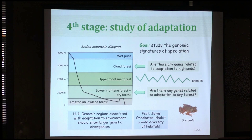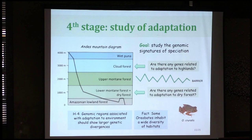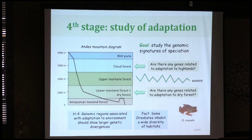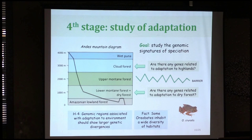The fourth stage is the study of adaptation. We want to study whether there are genomic regions that differ between species because of adaptation. For example, Oriobates crugalis can be found in up to three or four different habitat types — cloud forest, mountain forest, and dry forest. We want to know if different populations have distinct genomic regions that differ because of adaptation to their local environment.